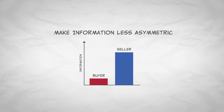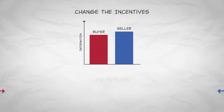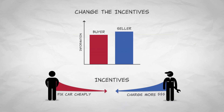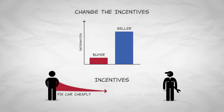Now, there are two types of potential solutions to moral hazard problems. First, since the problem is asymmetric information, you can try to make information less asymmetric. If both parties have similar information, then one party cannot so easily exploit the other. Second, if you can't get rid of the information asymmetry, you can try to reduce the incentive of the agent to exploit his or her informational advantage.